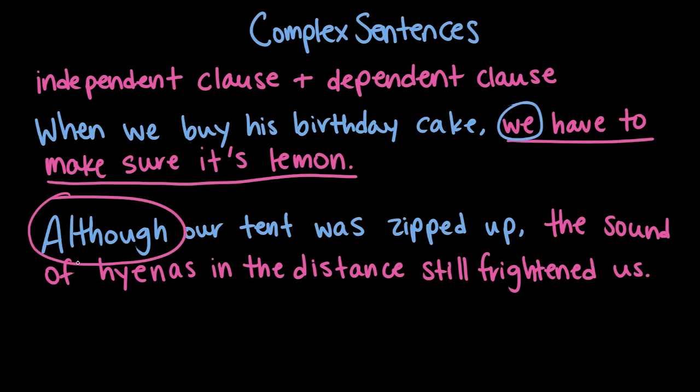One other thing: we're showing you two sentences where the dependent clause comes before the independent clause, but that's not necessarily always going to be the case. For example, we could have said 'the sound of hyenas in the distance frightened us, even though our tent was zipped up.' That would still be a complex sentence — an independent clause and a dependent clause — just in a different order. They don't have to be in the order we've done twice.